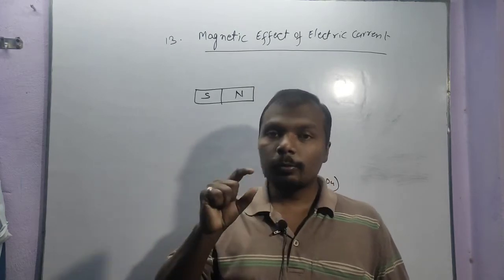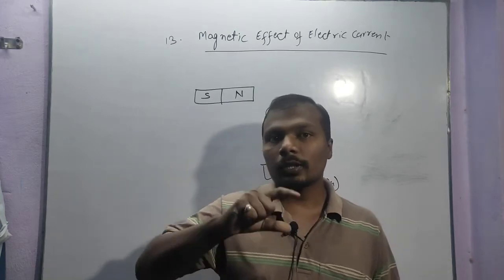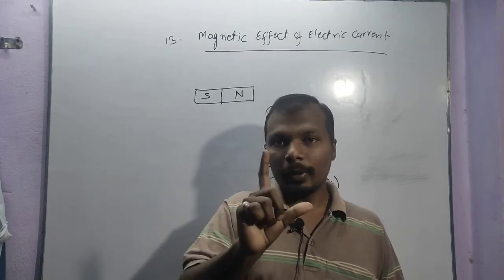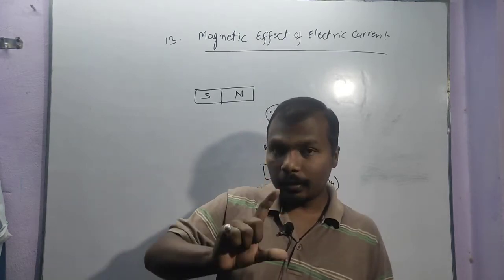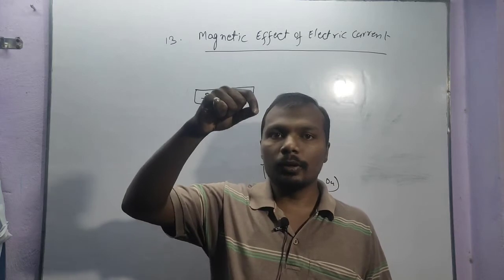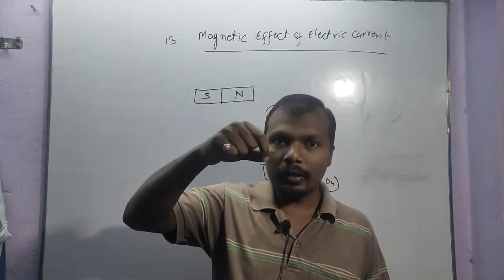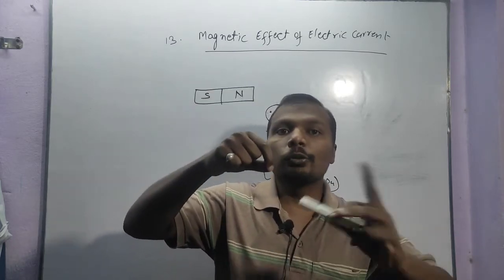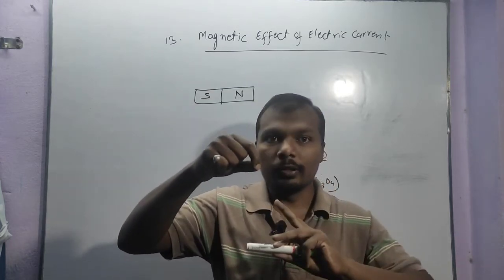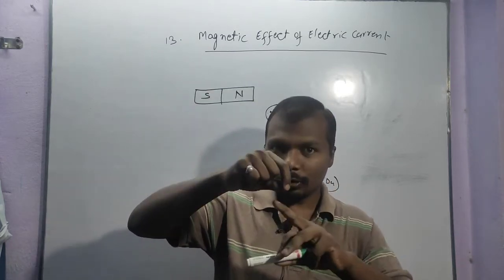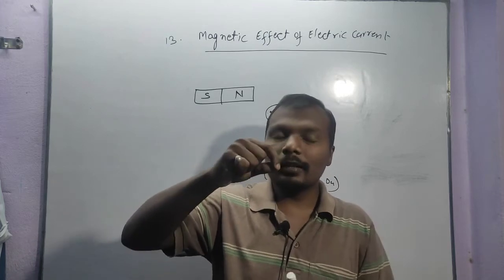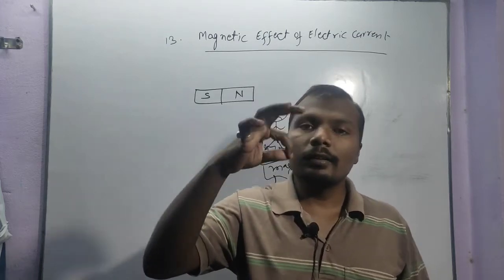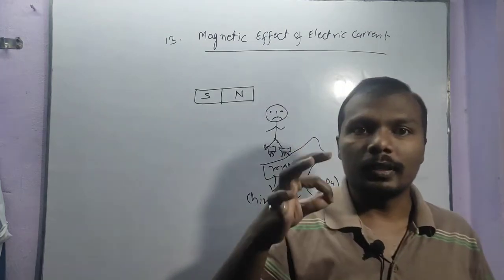Magnet has a North Pole and a South Pole. Whenever a magnet is suspended through a thread, it always points towards the North Pole. The North Pole is what it indicates and points towards.